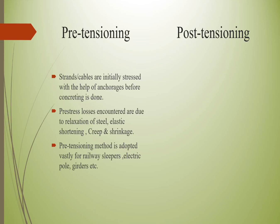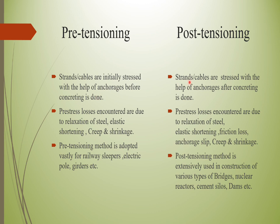There are two types of pre-stressing which can be done on site: pre-tensioning and post-tensioning. In pre-tensioning, the strands or cables are initially stressed with the help of anchor edges before concreting is done. In post-tensioning, strands and cables are stressed after concreting is done. The losses in pre-tensioning include relaxation of steel, elastic shortening, creep, and shrinkage. In post-tensioning, the same losses occur with additional losses such as friction loss and anchorage slip.